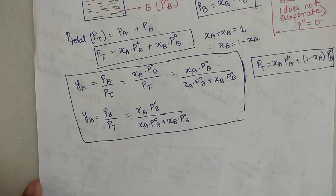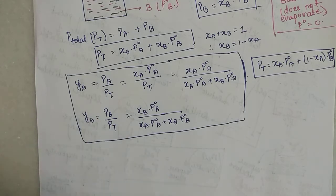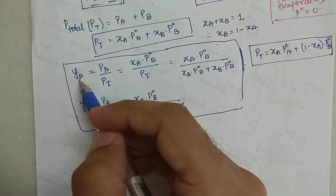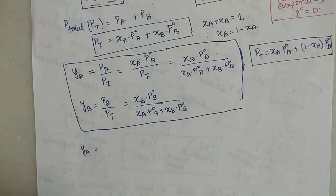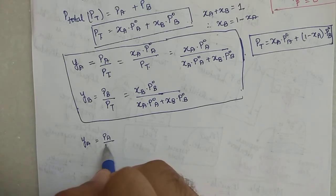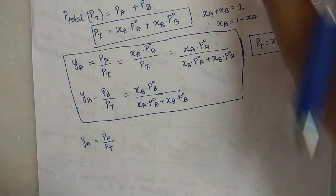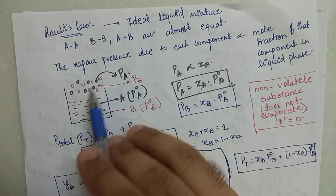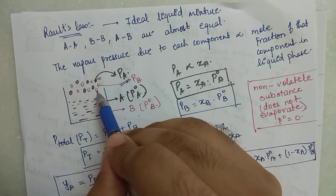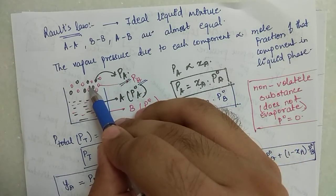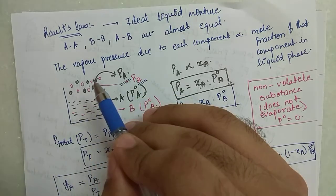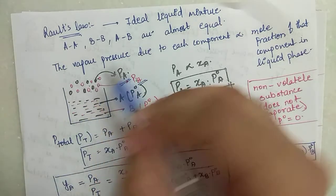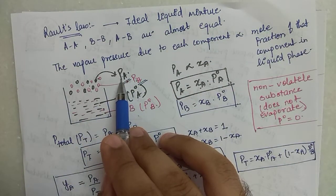Now continuing further from the previous lecture - if you look at these two relationships, we can treat them this way: ya is the mole fraction of A in vapor phase. ya can be written as partial pressure of A divided by total pressure. Here the molecules of A are exerting pressure pa, molecules of B are exerting pressure pb, so total pressure is pa plus pb. Mole fraction of A in vapor phase equals partial pressure of A divided by total pressure.